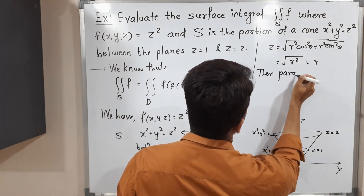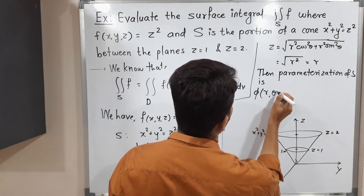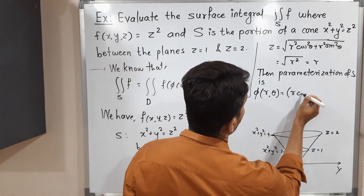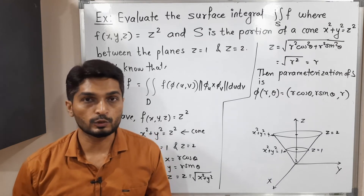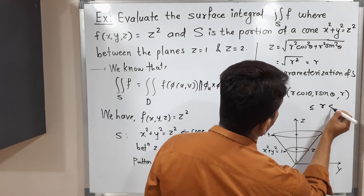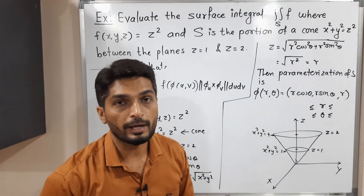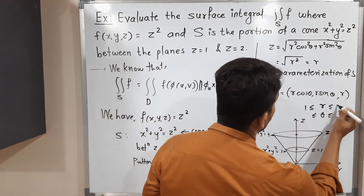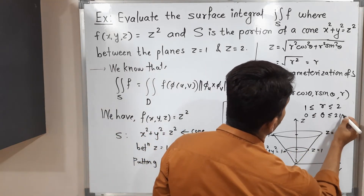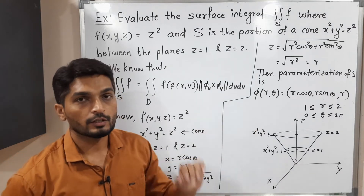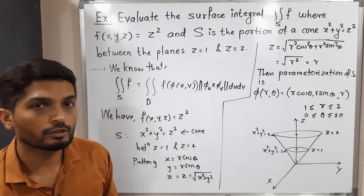The parametrization of S is phi(R, theta) equals (R cos theta, R sin theta, R). We have expressed everything in terms of R and theta. Now we find the limits: at the bottom the circle has radius 1 and at the top radius 2, so R varies from 1 to 2. To cover the complete surface we rotate 360 degrees, so theta varies from 0 to 2 pi. In this way we have the parametrization phi.